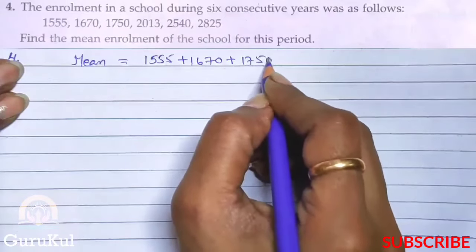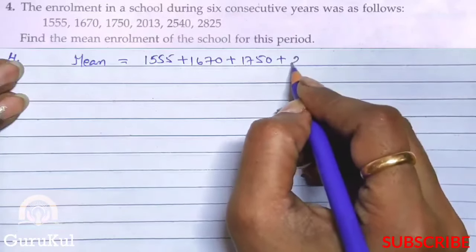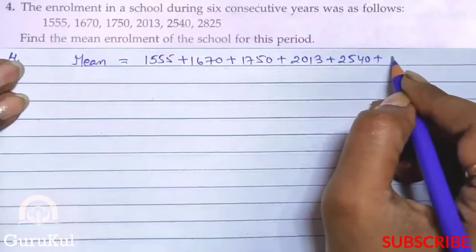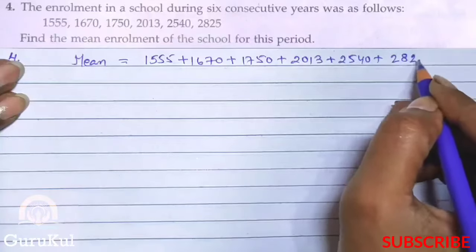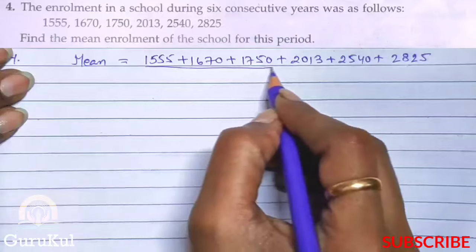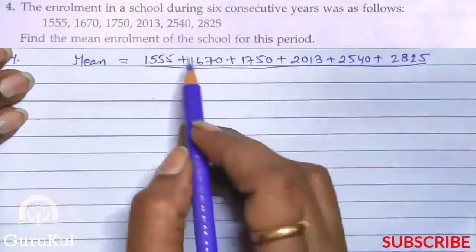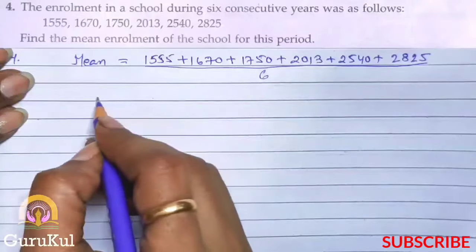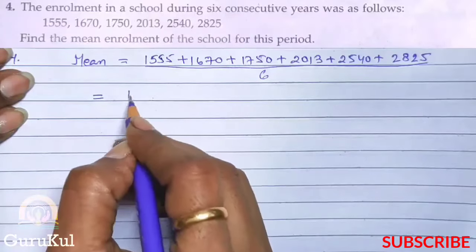Make sure there is no error. So 2540 plus 2825, right? Now this divided by number of observations: 1, 2, 3, 4, 5, 6.